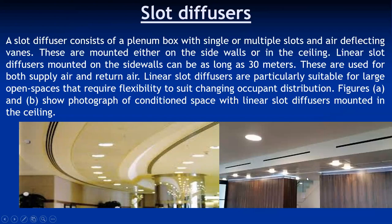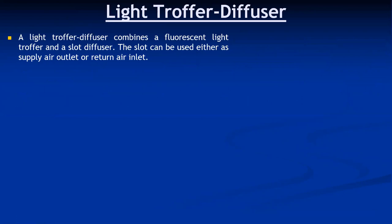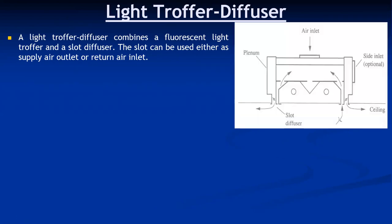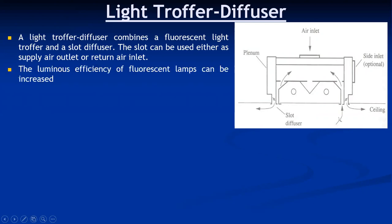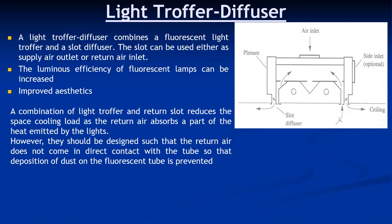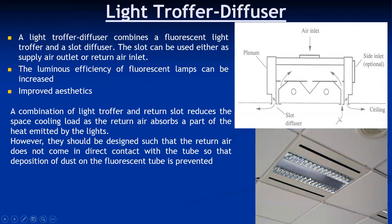One special type of diffuser is called the light troffer diffuser. A light troffer diffuser combines a fluorescent light troffer and a slot diffuser. The slot can be used either as a supply air outlet or return air inlet. Fluorescent lamps are located within the unit, and air flows through these slots — it may be return air or supply air. Generally, it is suitable for return air.